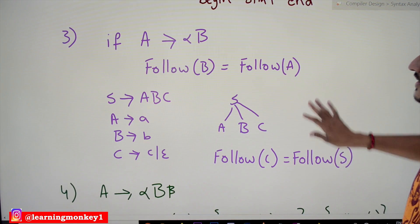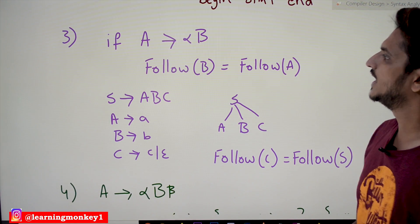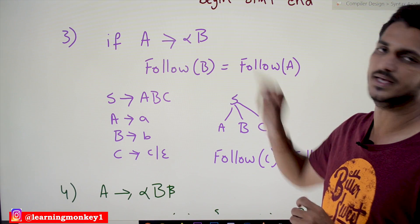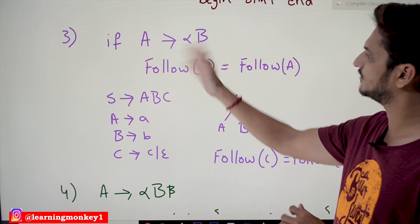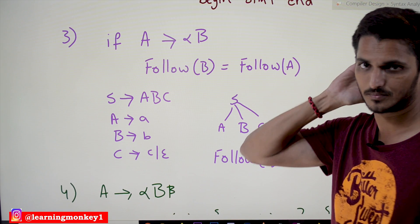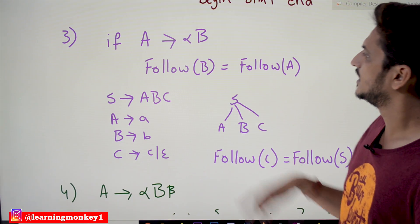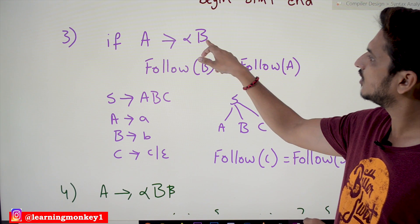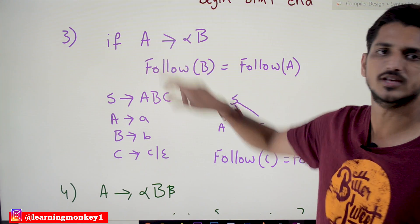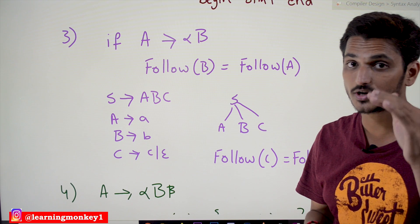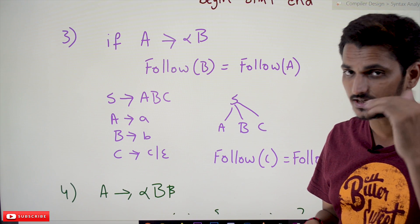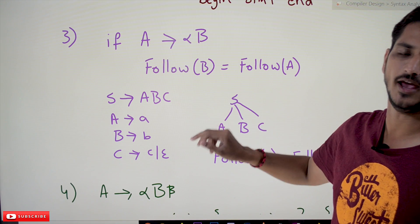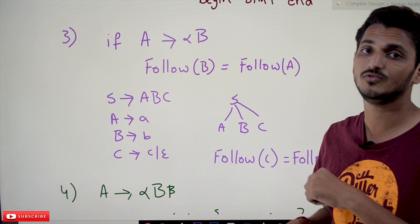The third important condition: if a production is of the form A → αB (B is at the end), then FOLLOW(B) = FOLLOW(A). This is very important — please concentrate, it is a bit confusing.